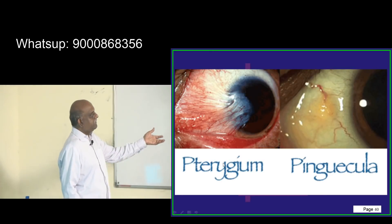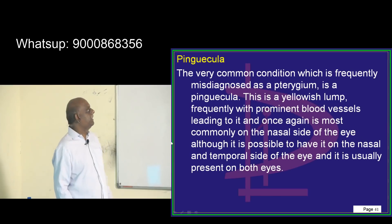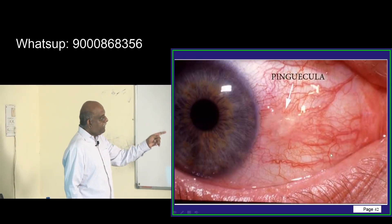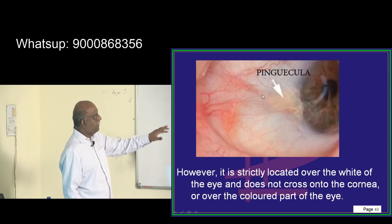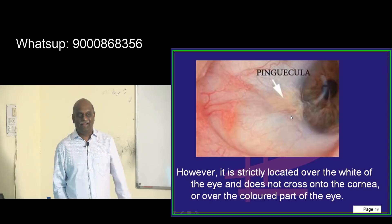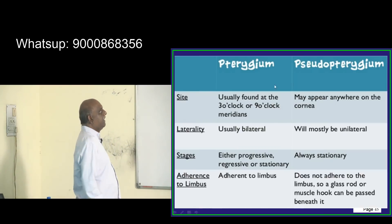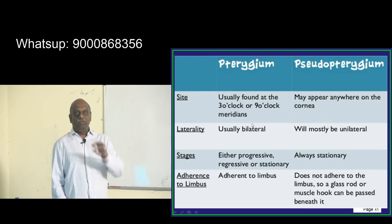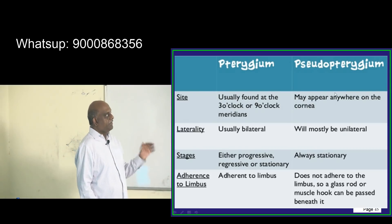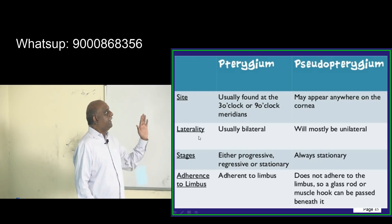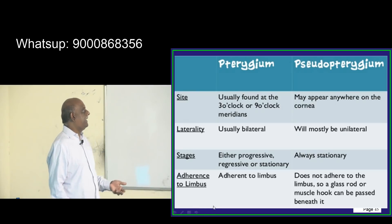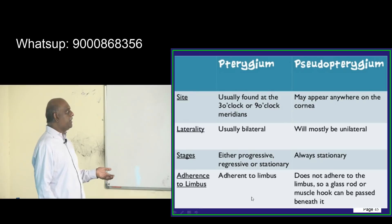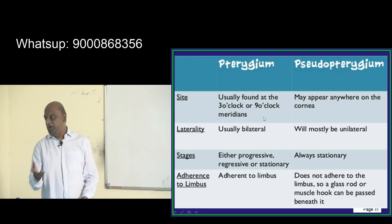Pterygium can cross the limbus. Pinguecula does not cross the limbus — its color is typically yellowish, that lipid kind of degeneration. Pterygium is usually found between the 3 o'clock to 9 o'clock position, whereas pseudo-pterygium or pinguecula can appear anywhere. Pterygium is usually bilateral but pinguecula is mostly unilateral. Pinguecula is stationary, but pterygium is progressive, and adherence to the limbus characterizes pterygium.